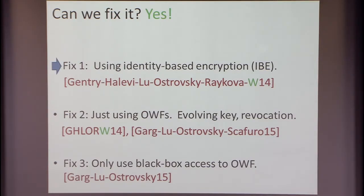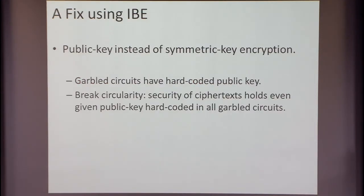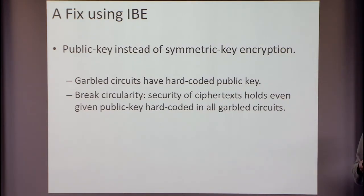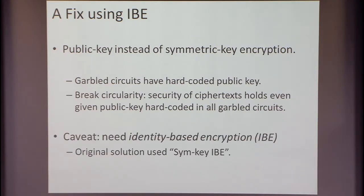I'm going to show the simplest fix: identity-based encryption sounds complicated, but it's actually the simplest way to do this. The problem was: we were encrypting things and the decryption key was hard-coded in various garbled circuits. So let's use public-key instead of symmetric-key encryption — we shouldn't need to hard-code the public key. The value hard-coded in the circuits would just be a public key, not a secret key. Now the circuits can still encrypt stuff, but they can't decrypt it, so you get security.